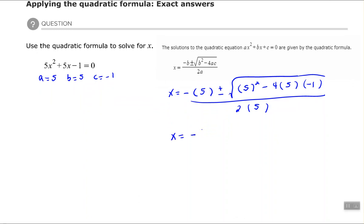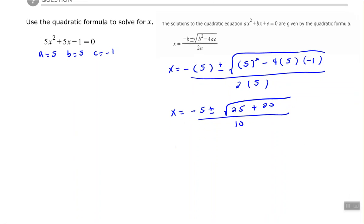Now we just start simplifying. Negative times 5 is -5. And then under the radical, we have 5² which is 25. And then we have -4 times 5 times -1. So we have 2 negatives, so that will make a positive 20, all over 2 times 5 which is 10. So -5 plus or minus. Remember that plus or minus comes when we take the square root of each side of the equation to solve for x² or solve for x where we have x².